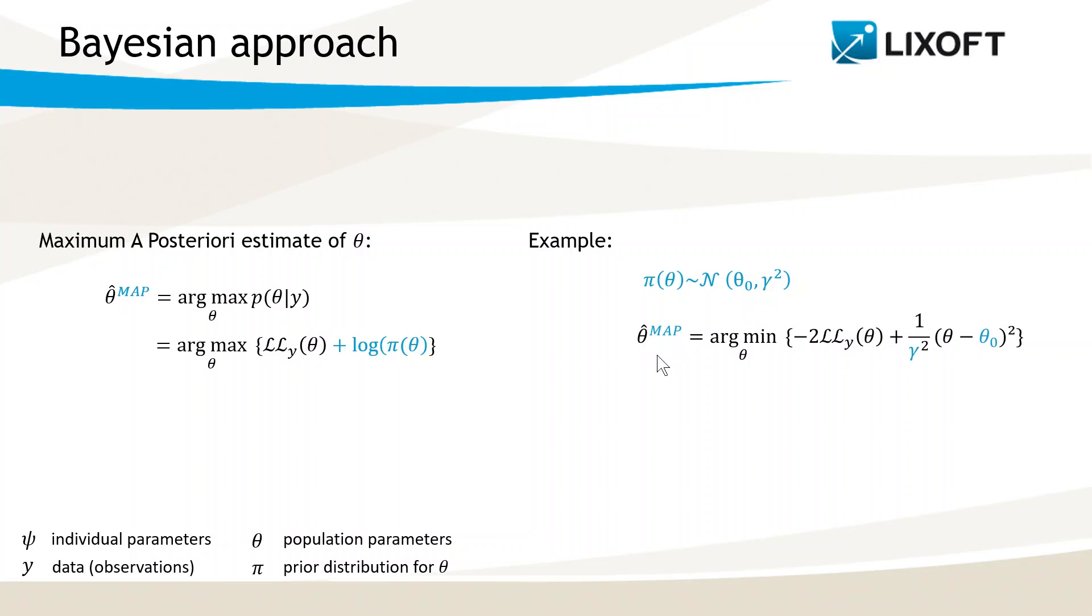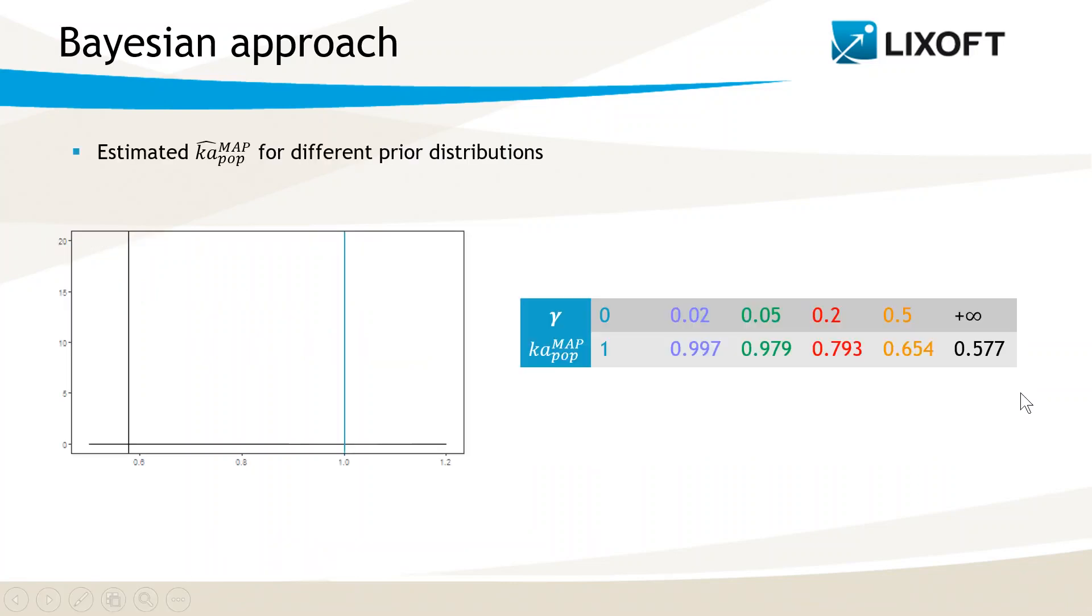Then, the maximum aposteriori estimate is the solution of this minimization problem. The solution will be a trade-off between the maximum likelihood estimation, which minimizes the difference to the data, and θ0, which minimizes this difference. And the smaller γ is, the closer the solution will be to the prior value θ0.